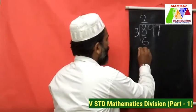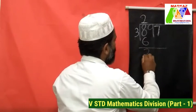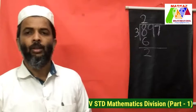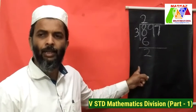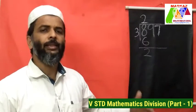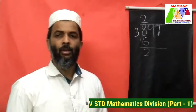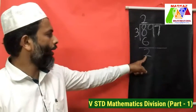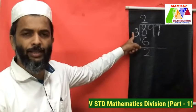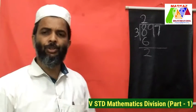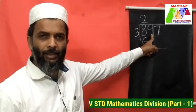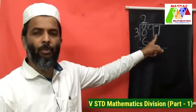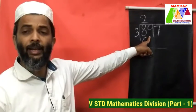6 from 8 is 2. Now we have subtracted the numbers. The next step is to bring down the next digit because 2 is less than the divisor. The next digit is 9, so let's bring down 9 here.